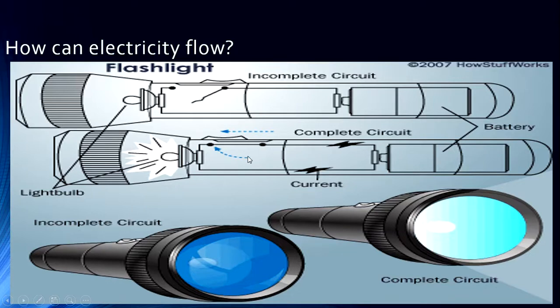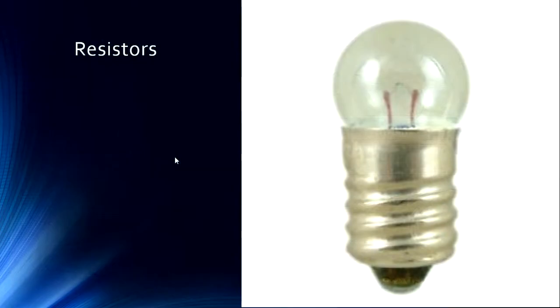An object in an electrical circuit that resists the flow of electrons is called a resistor. Here this bulb works as a resistor. A resistor is something that resists the flow of electrons, makes it slower. Resistance is measured in units called ohms. Electrons lose energy when moving through a resistor. The energy can be transformed into heat or light. This bulb is an example of a resistor.